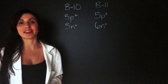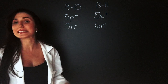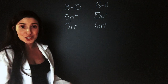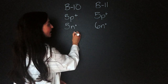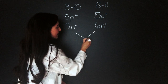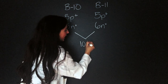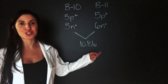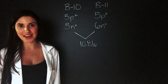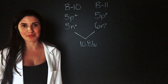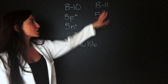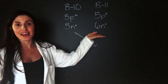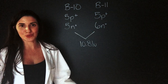Now, we can't assume that these two isotopes occur in the same amount in the world. On the periodic table, the average atomic mass of both of these isotopes is 10.81 U. U is just a short form of atomic mass unit, which is how we measure atomic mass. Because this number is closer to 11, we know that B11 is more abundant in the world.